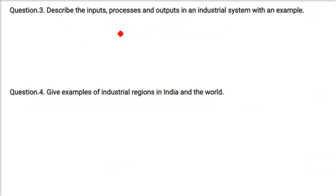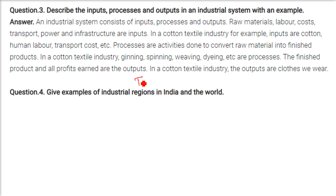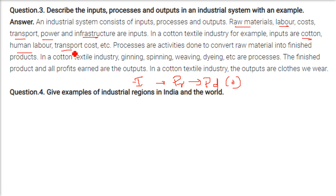Describe the inputs, processes, and outputs of an industrial system with an example. An industrial system consists of inputs, then certain processing, then the output. In the cotton textile industry: inputs are cotton, human labour, transport costs, power, and infrastructure. The processes are activities and steps to convert raw materials into a final product — in cotton textile, these are ginning, spinning, weaving, and dyeing. The output is the finished product and profits earned — for cotton textile, the output is the cloth we wear.